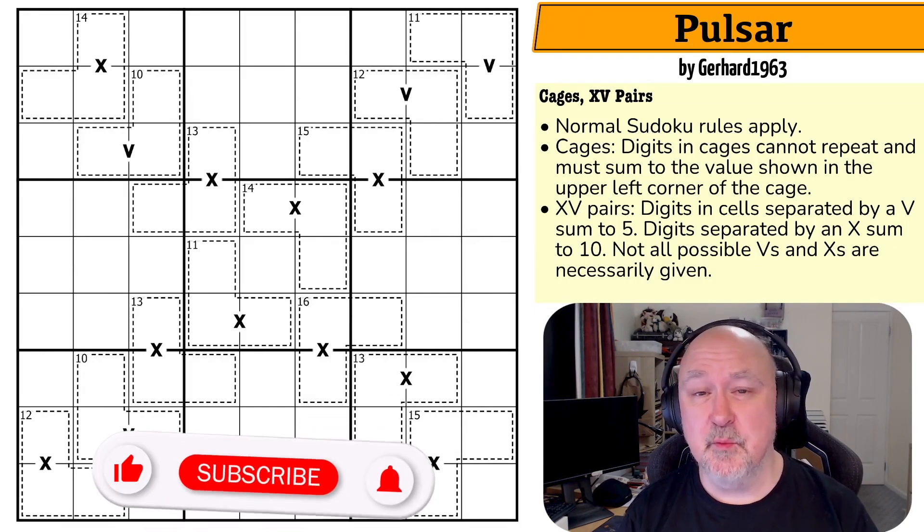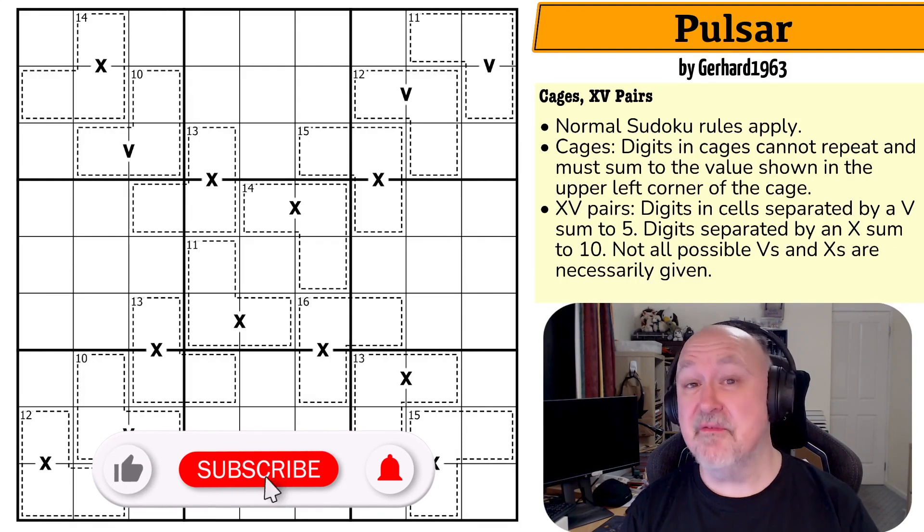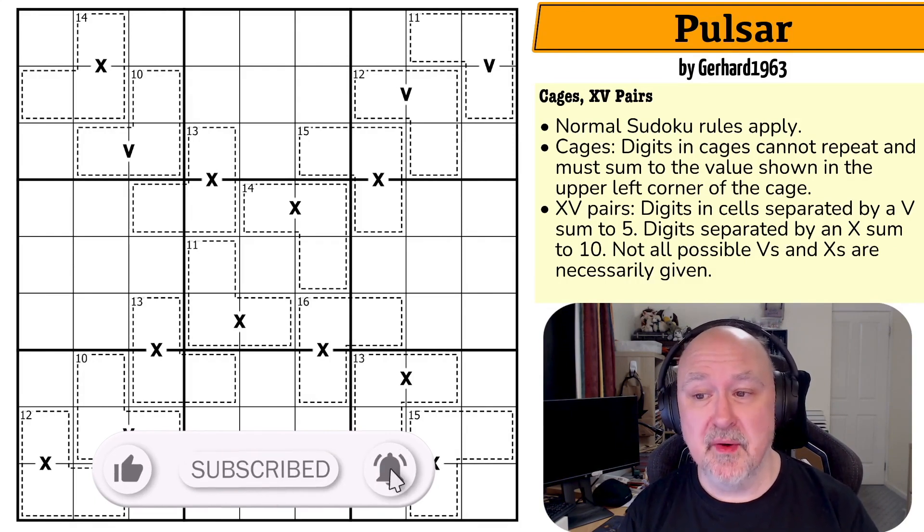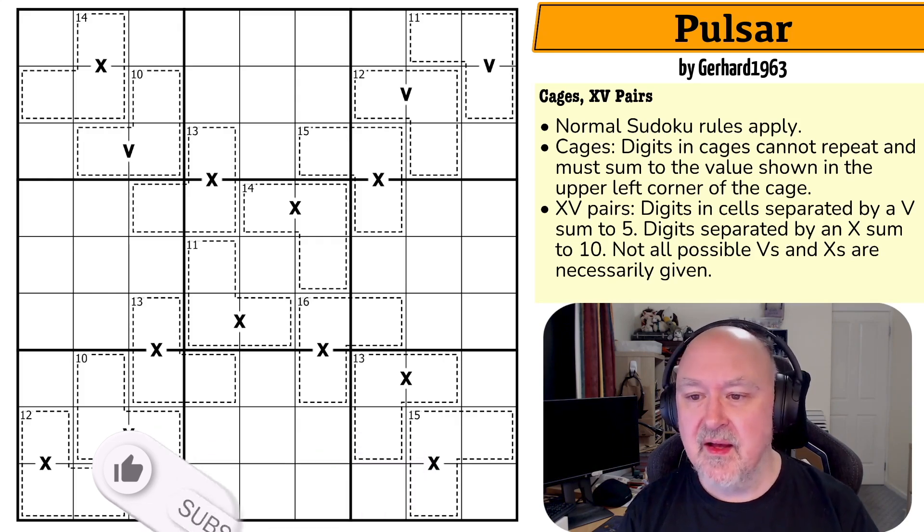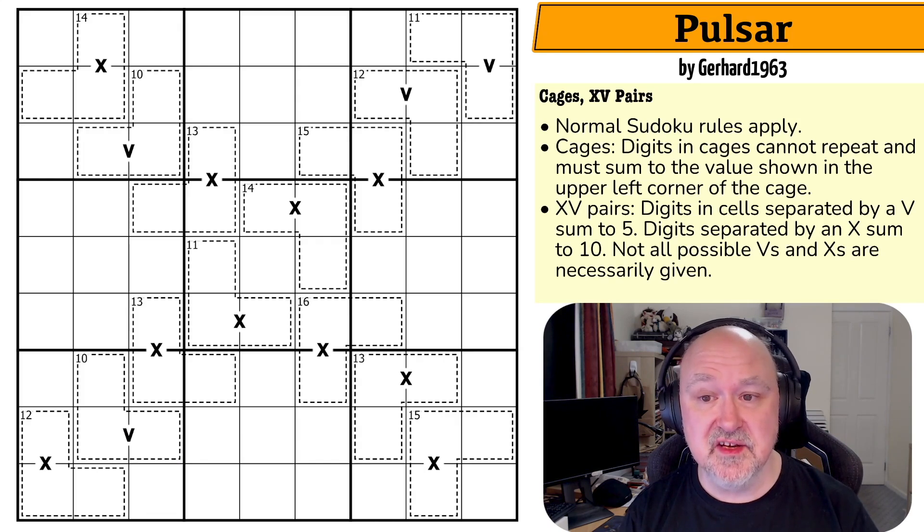Today I'm going to be doing that with what I've been told is an easy but fun puzzle called Pulsar by Gerhard1963, a puzzle that uses a couple of very standard constraints - cages and XV pairs - in a way that should give us some fairly easy early deductions. These are very common constraints and are a lot of fun when used well.